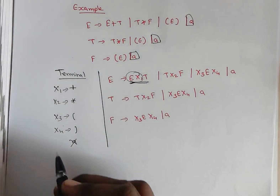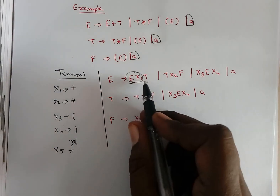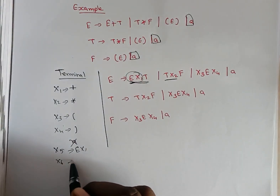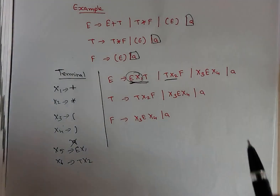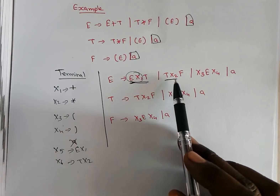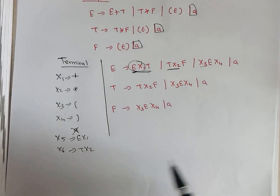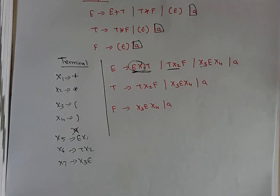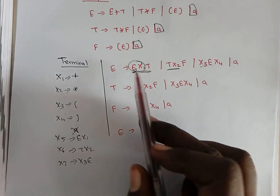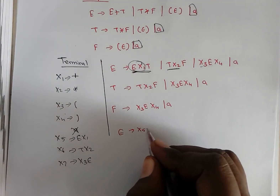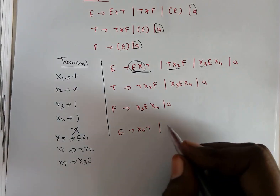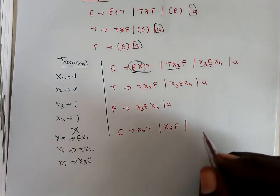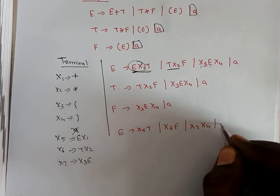For example, x5 is assigned as E x1. And these two symbols can be combined as x6 = T x2. Any two variables can be combined and assigned a single variable. Here, x3 and E can be substituted with x7, so x7 tends to x3 E. When I rewrite the grammar: E tends to x5 combined with T; T x2 is substituted as x6 combined with F; and x3 E is denoted as x7, with x4 combined with a.